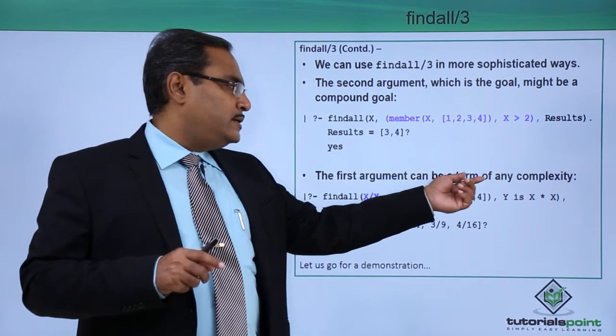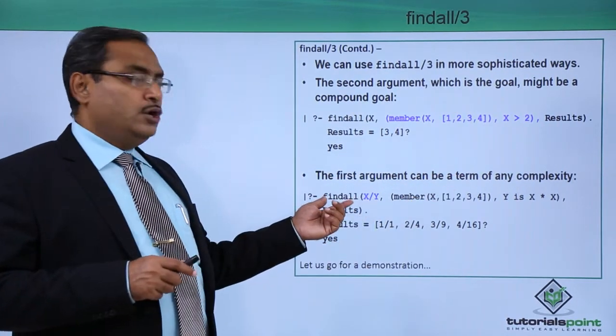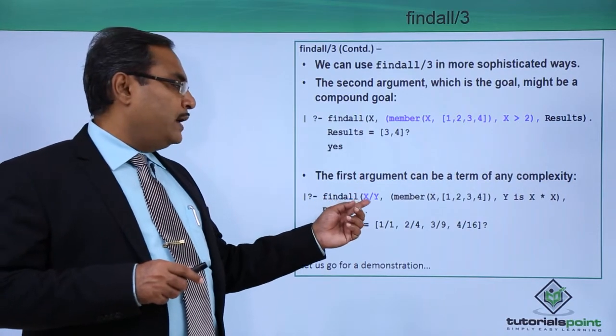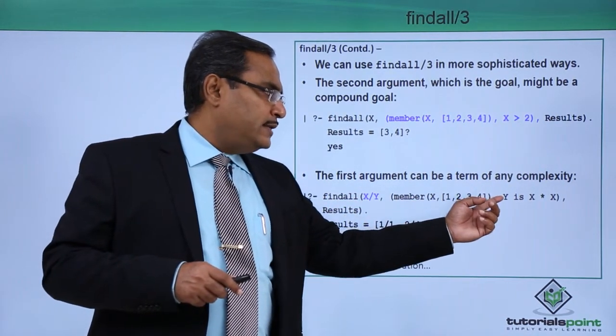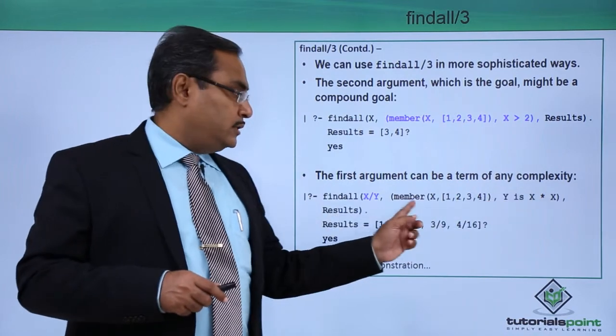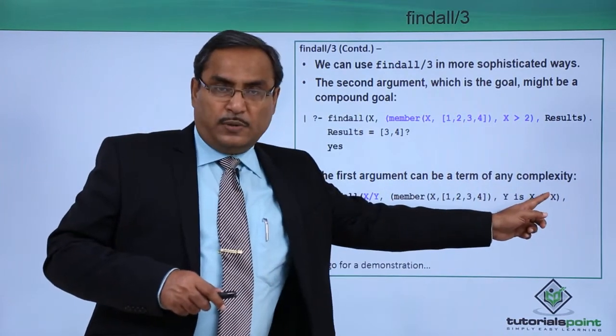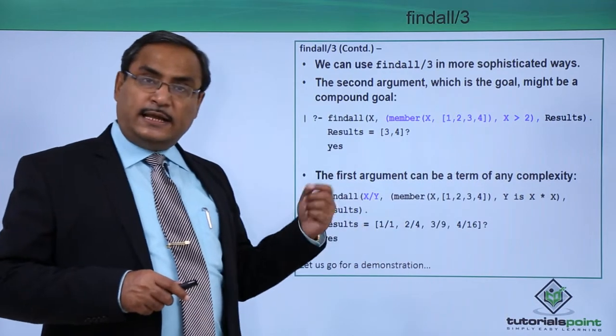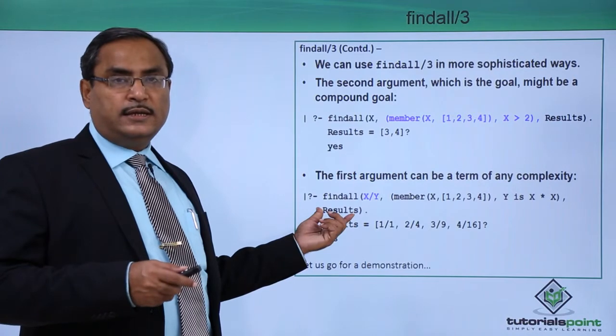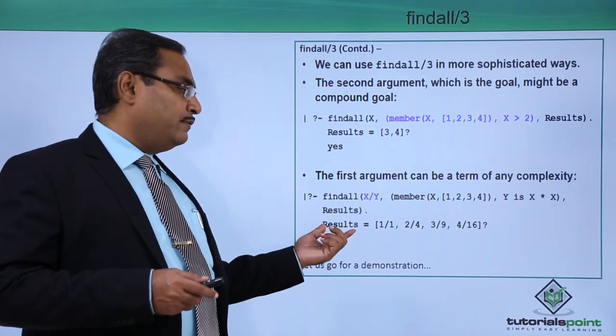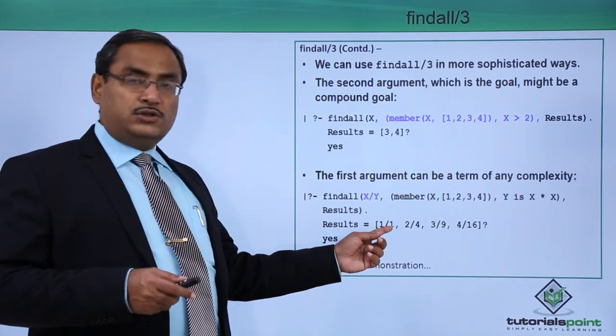The first argument can be a term of any complexity. So findall(X by Y, where member(X, [1,2,3,4]) and Y is X star X. The second argument is this one. Y is X star X. That Y will be coming in X by Y format and that will produce output list Results.